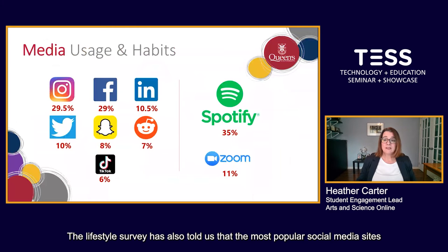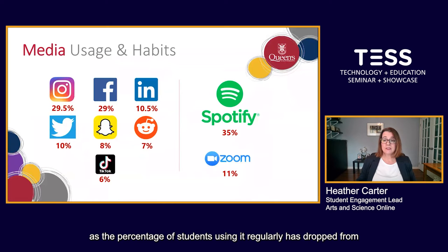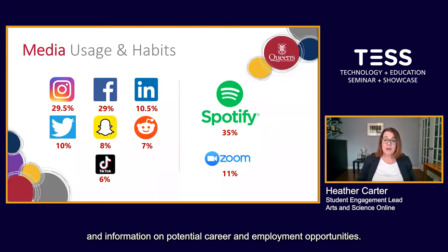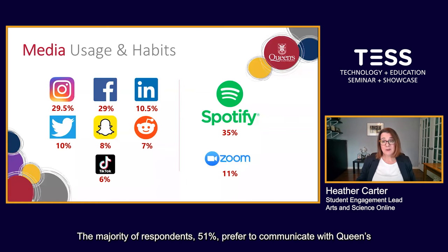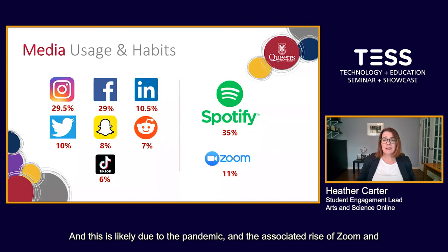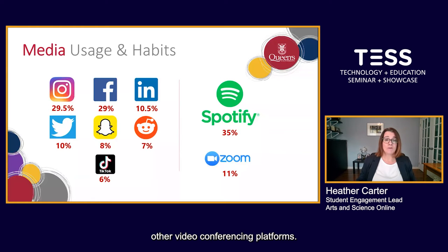The lifestyle survey also told us that the most popular social media sites used are Instagram and Facebook, and Facebook has become less popular — the percentage of students using it regularly dropped from 38% to 29%. We also learned that distance students want to see social media posts about reminders for important dates and deadlines, spotlights on courses, and information on potential career and employment opportunities. The majority of respondents — 51% — prefer to communicate with the Queen's ASO team via email, while 11% prefer video chat platforms, likely due to the pandemic and the rise of Zoom and other video conferencing tools.